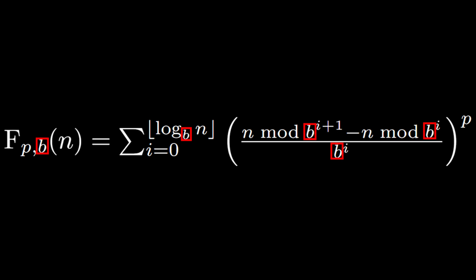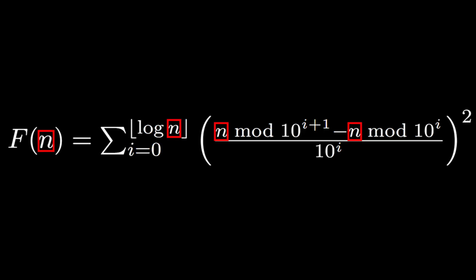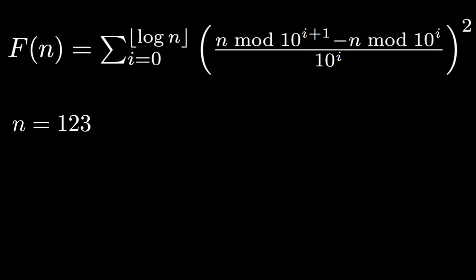We are performing calculations in powers other than squares. n is the input number, the number you are applying the function to, and i is the digit position ranging from zero to the floor of the log of n. As an example, let's consider n equals 123.